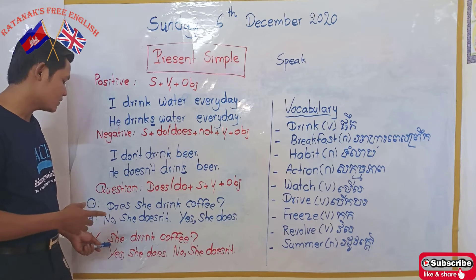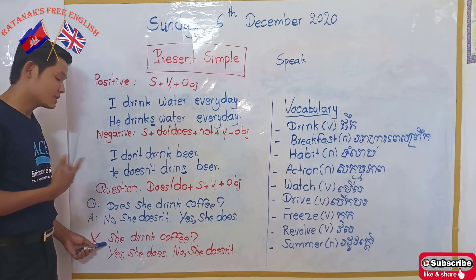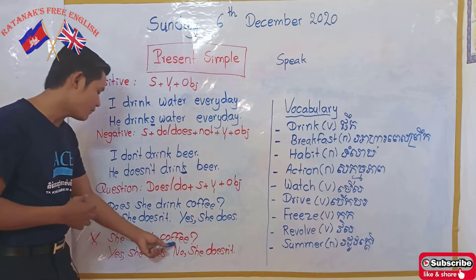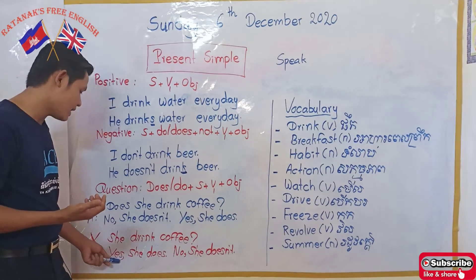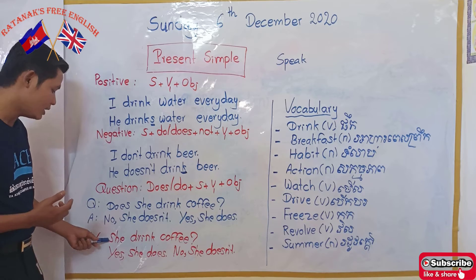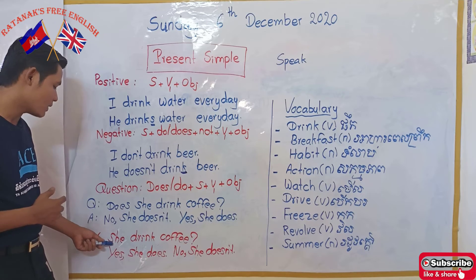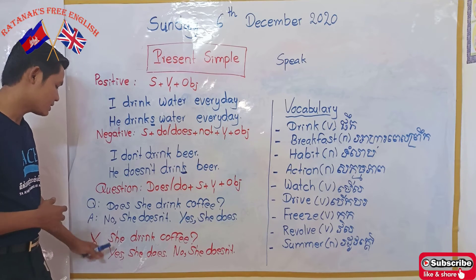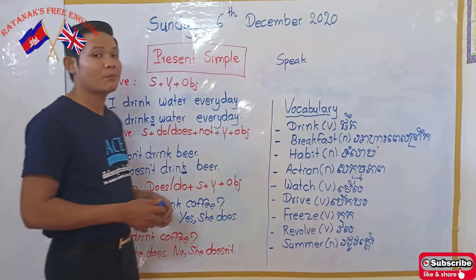Please avoid writing questions like this — it is a common mistake that students sometimes make: 'She drink coffee?' — without the auxiliary verb. Even if you answer 'Yes, she does' or 'No, she doesn't,' the question itself is not correct because you are not using the right auxiliary verb with the right subject. So this is not the correct question form.